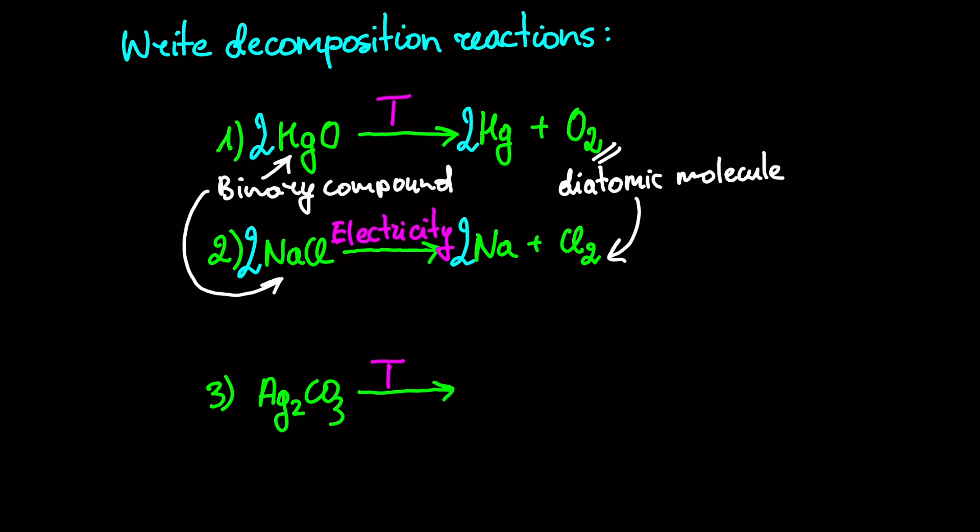Now, we have a decomposition reaction of silver carbonate. What are the products for this reaction? Well, our reactant is salt with a carbonate anion. So, basic oxide and carbon dioxide should be produced.